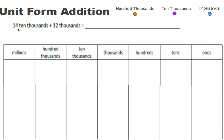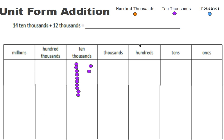Let's try one with larger numbers. I have two numbers written in unit form: fourteen ten-thousands and twelve thousands. I'm going to use this place value chart again. I need to put fourteen into the ten-thousands column, so I'm going to just put ten in there — eleven, twelve, thirteen, fourteen. So now I have fourteen ten-thousands.